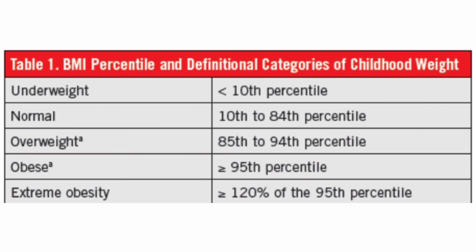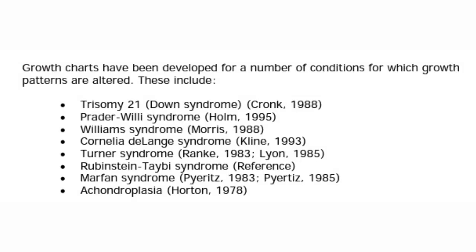The BMI percentile classification: underweight is less than 10th centile; normal is 10th to 84th centile; overweight is 85th to 94th centile; obese is more than 95th centile; and more than 120% of the 95th centile is extreme obesity. There are specific conditions where the growth pattern is different, and specific growth charts are recommended, such as for trisomy 21, Prader-Willi, Williams syndrome, Cornelia de Lange, Turner syndrome, Rubinstein-Taybi syndrome, Marfan syndrome, and achondroplasia.